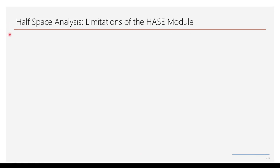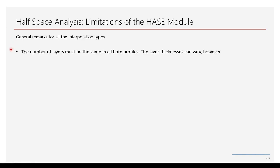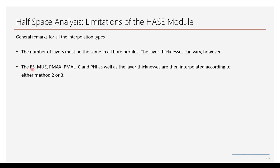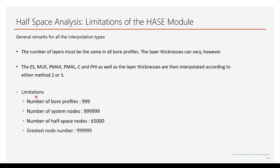Some general remarks on the interpolation of soil profiles: when specifying different soil characteristics in the plan view, the number of layers must be the same in all bore profiles, though layer thicknesses can vary. The items ES, MU, PMX, PMEL, C, and V, as well as layer thicknesses, are then interpolated according to either method 2 or 3. If there is a large difference between the stiffness of two adjacent soil layers, numerical problems may result — in that case, half-space theory is no longer applicable and an error message is printed. I am also presenting the limitations of the half-space technique undertaken by module HASE for your information.